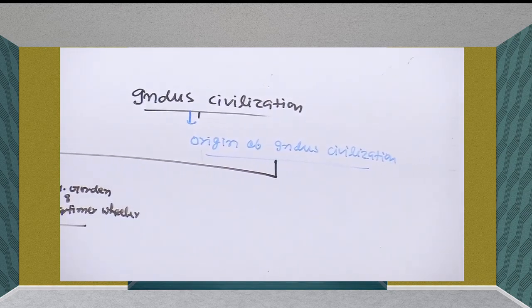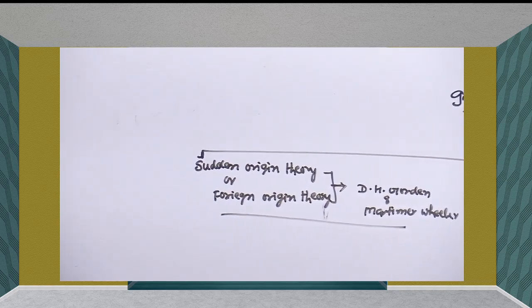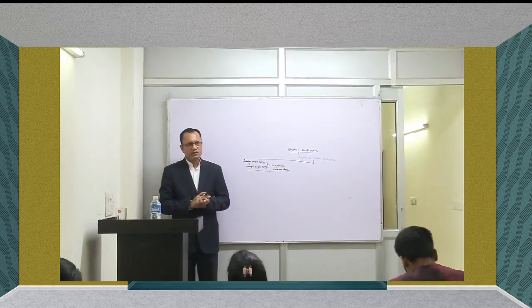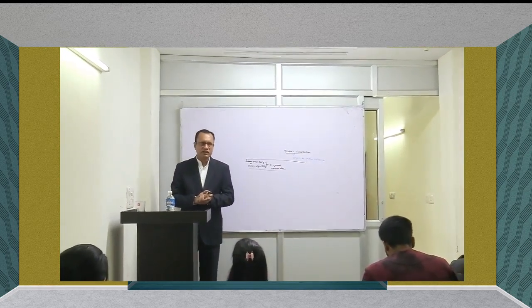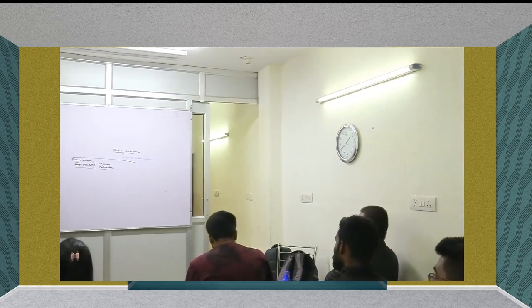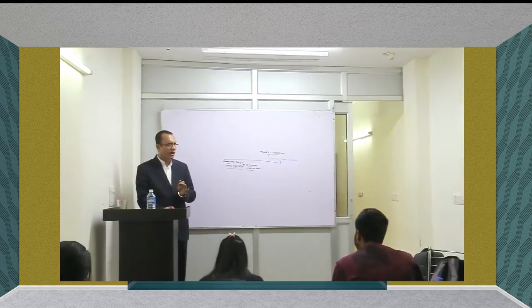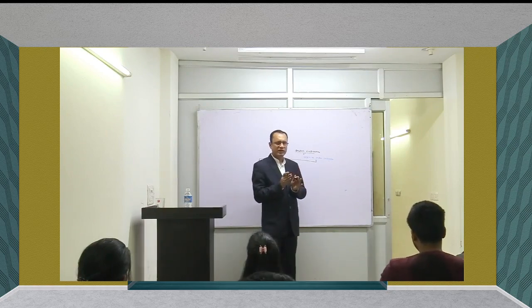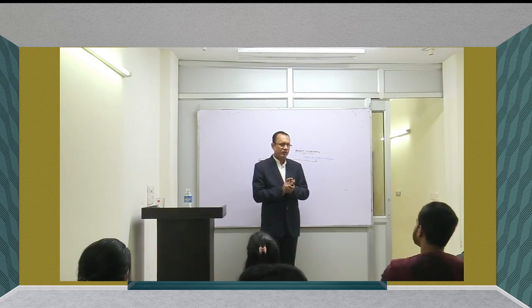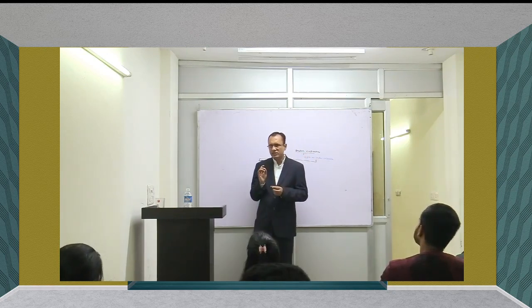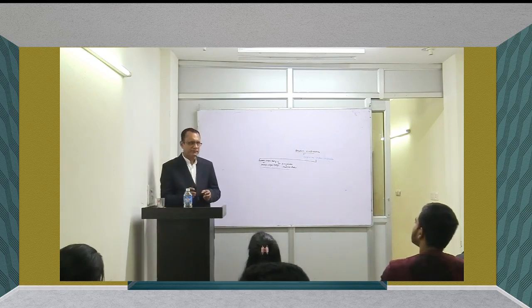For the understanding of that approach, we have to understand some background. When the British came to India and occupied India, they proposed that Indian culture started in the Vedic period — that Aryan culture was developed in India by foreign Aryans, because Aryans came to India from Middle Asia. When Aryans first came from Middle Asia, they were divided into two parts: one group came to India and another went to Europe. So the British proposed that culture in India was developed by Aryans.